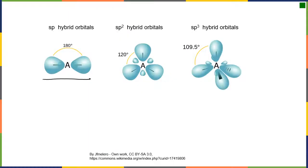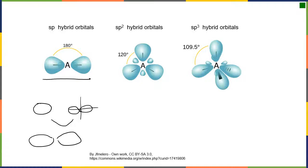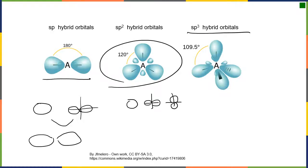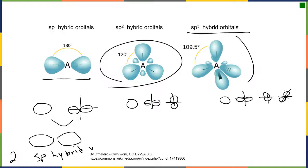Looking at what these orbitals look like in space: for SP, we bring in one S and one P orbital and mix them to get two new orbitals. For SP2, we mix one S and two P's to make three new orbitals in trigonal planar geometry. For SP3, we mix one S and all three P orbitals to make four new orbitals in tetrahedral geometry. So SP gives two hybrid orbitals, SP2 gives three SP2 hybrid orbitals, and SP3 gives four SP3 hybrid orbitals.